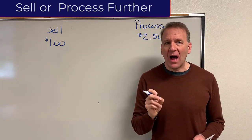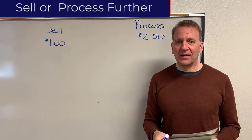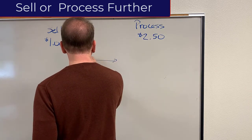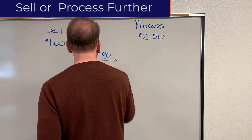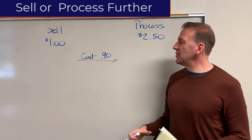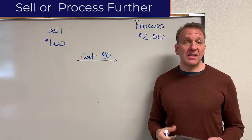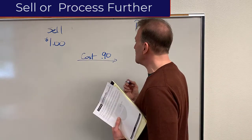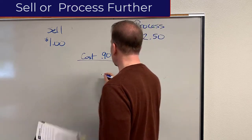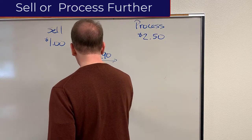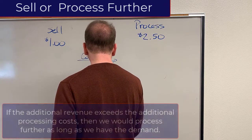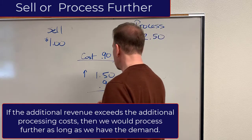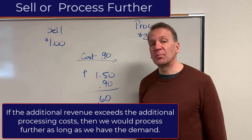The question then is, what is the cost to process it further? If my cost to process this further is 90 cents, then in this scenario I would want to do that because it's increasing the value by $1.50. So my revenue is going up $1.50, but my cost to process it a little further is 90 cents. So that's generating me 60 more cents of profits.